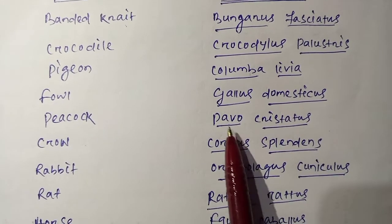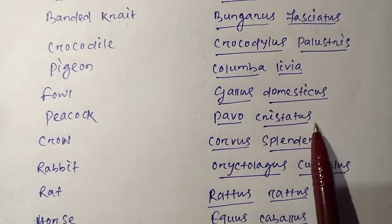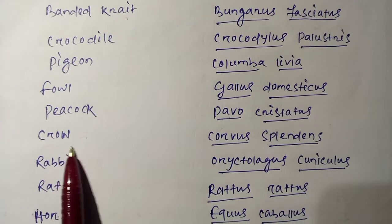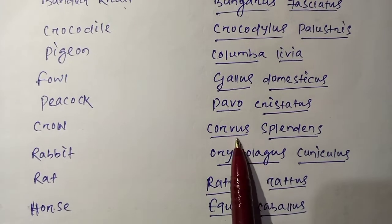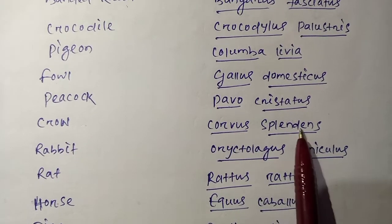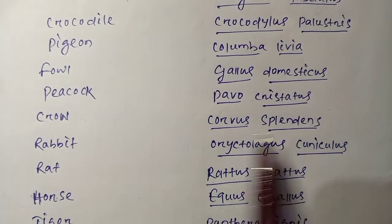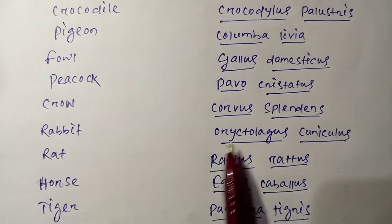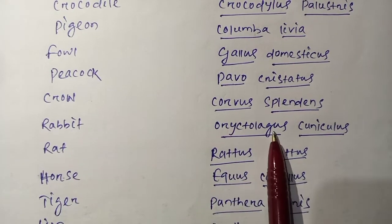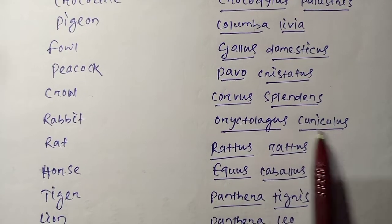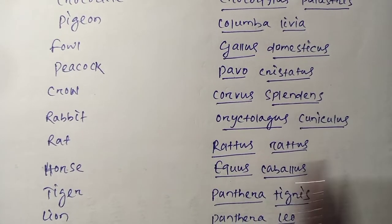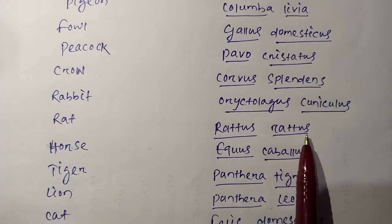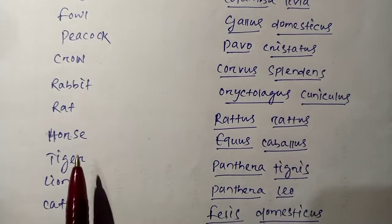Peacock is the national bird of India. Next is Crow. The zoological name is Corvus splendens. Next is Rabbit. The scientific name is Oryctolagus cuniculus. Next is Rat. The scientific name is Rattus rattus.